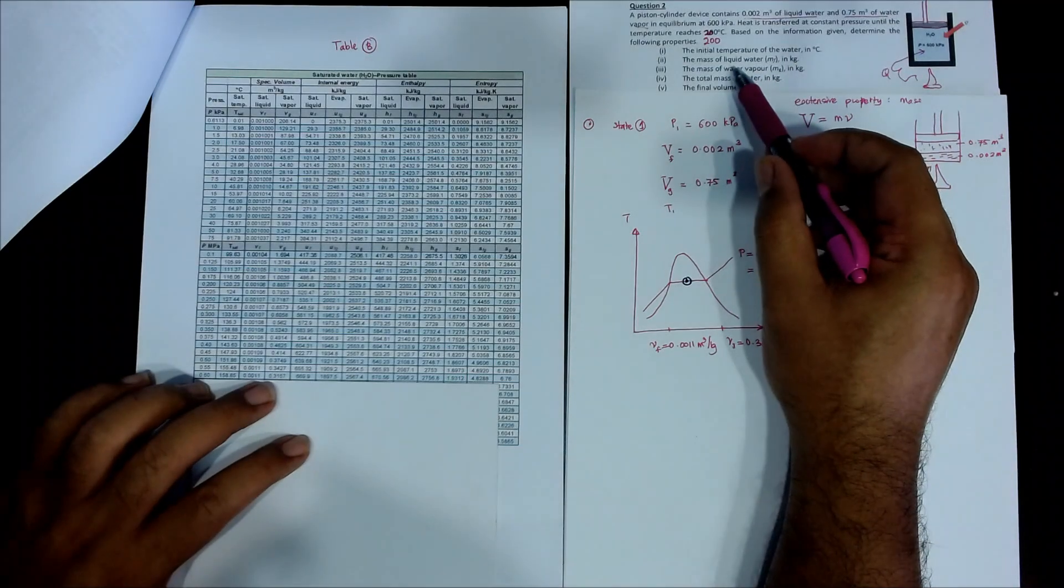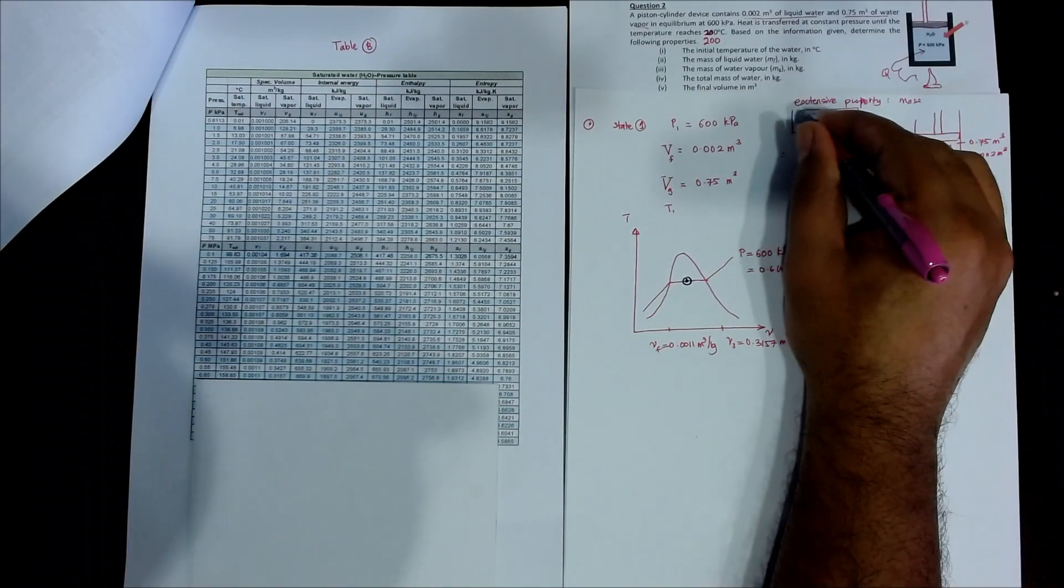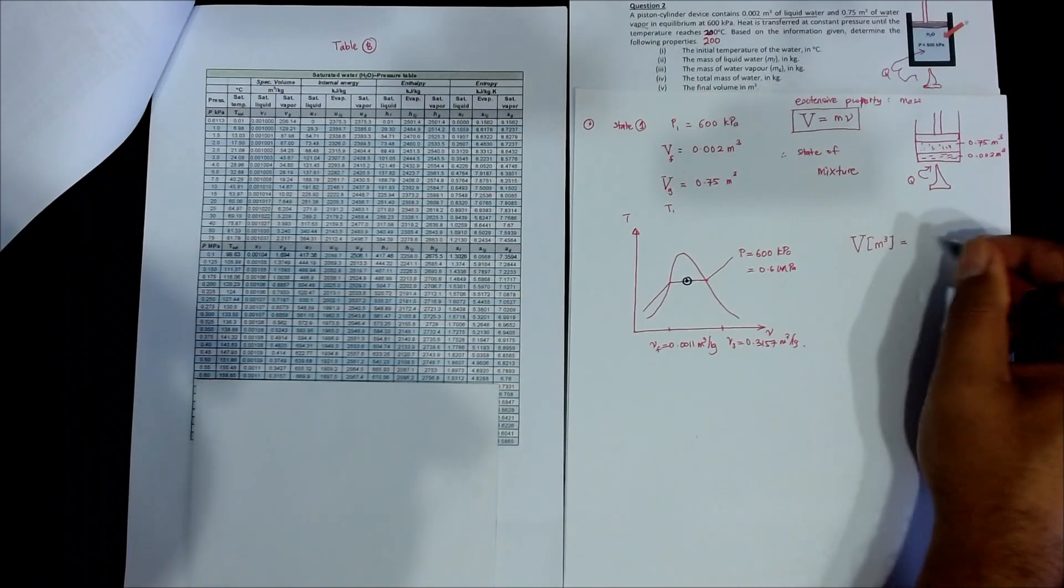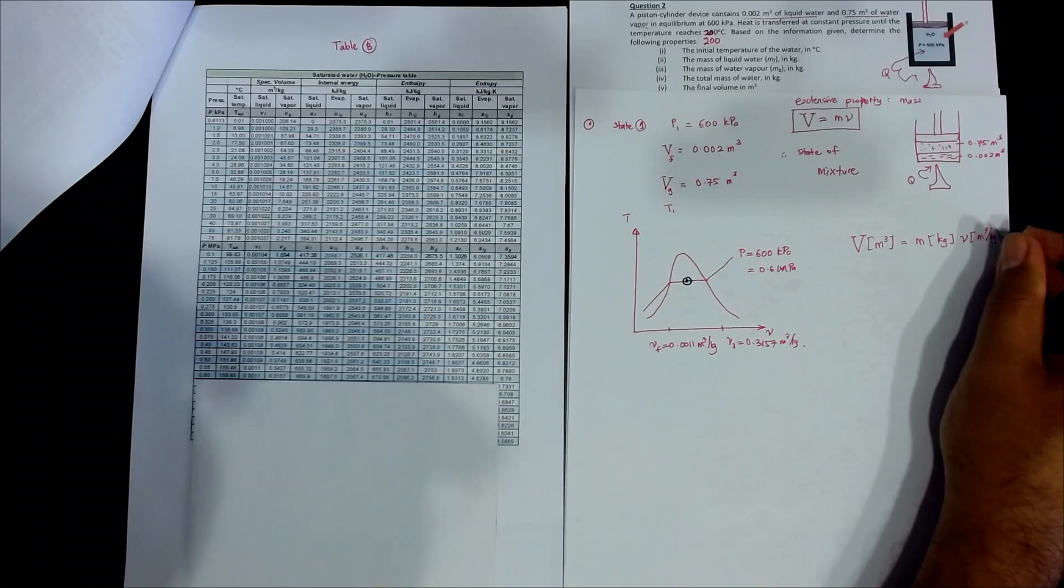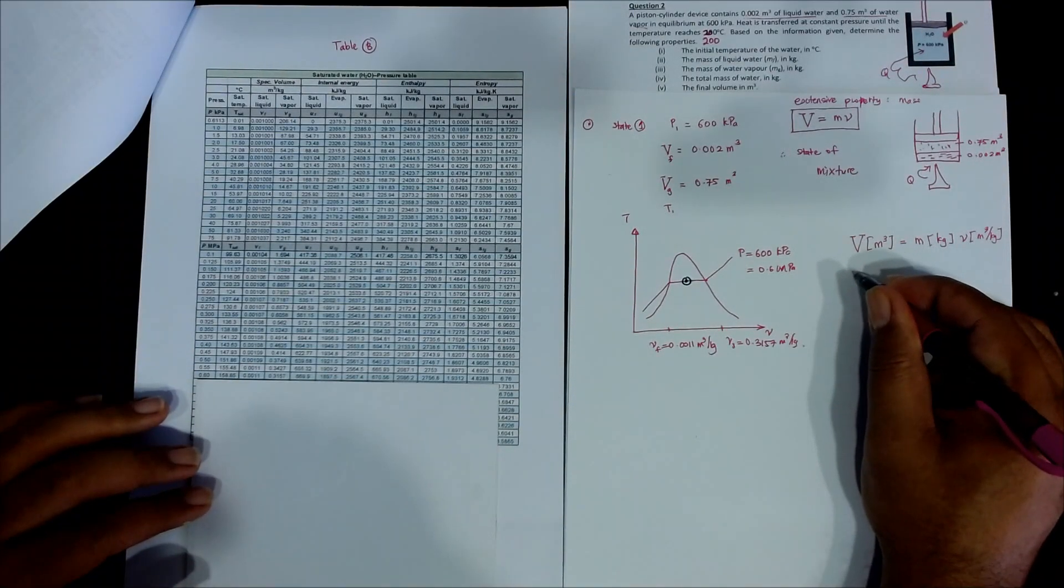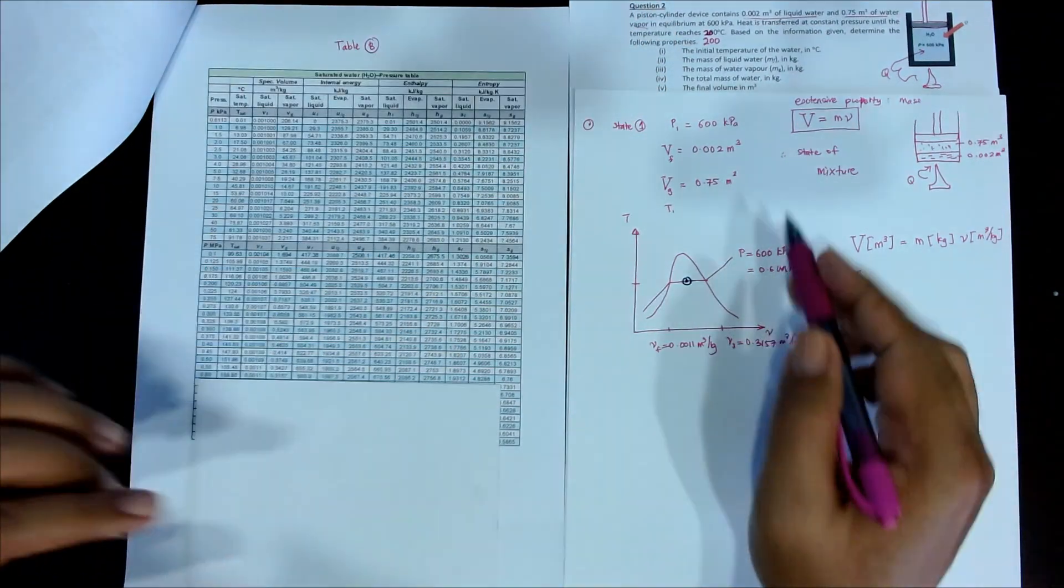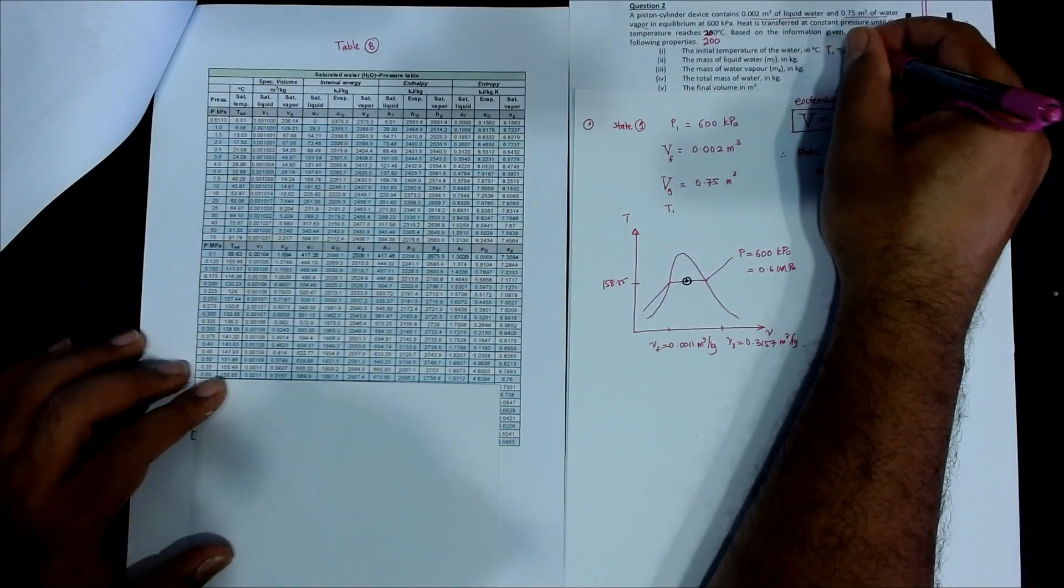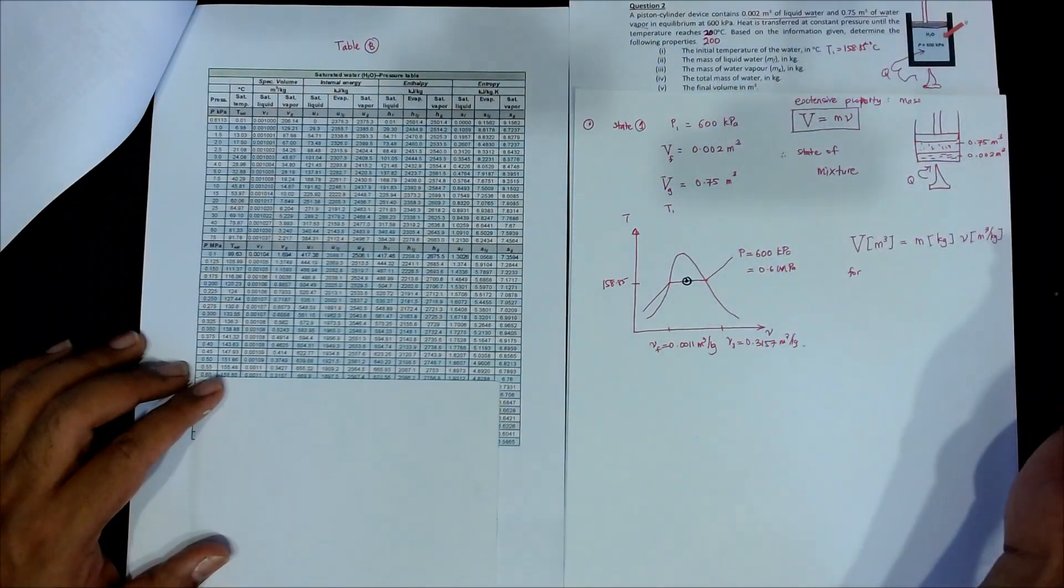The question I ask is what is the mass of liquid water? So MF. Remember this formula: volume equal to mass times specific volume. Volume is unit of meter cube, mass is unit of kilogram, small V is unit of meter cube per kilogram. That is why we need to use this table. So for number one, what is this one? Temperature. So number one first, this one, 158.85. So you can see, this one equals to 158.85 degree Celsius. So we solved part A, because of the other temperature, initial temperature.